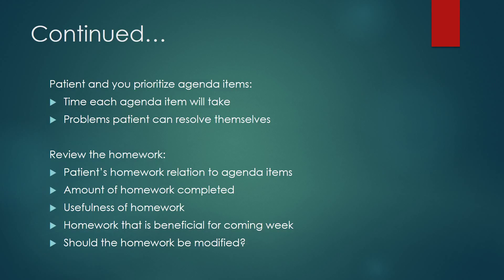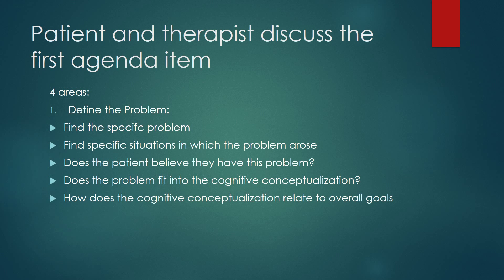The patient and therapist should prioritize the agenda items. The therapist can ask: How long will each agenda item take? What problems can the patient solve themselves without the therapist's help? The next section involves reviewing the homework assigned to the patient — its relationship to the agenda items, how much was completed, its usefulness and benefit to the patient for the following week, and whether the homework should be modified.